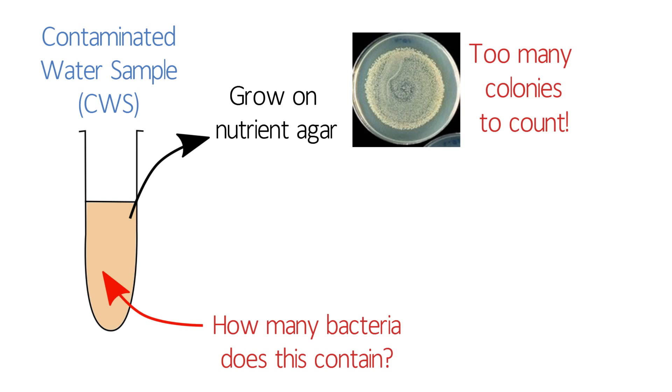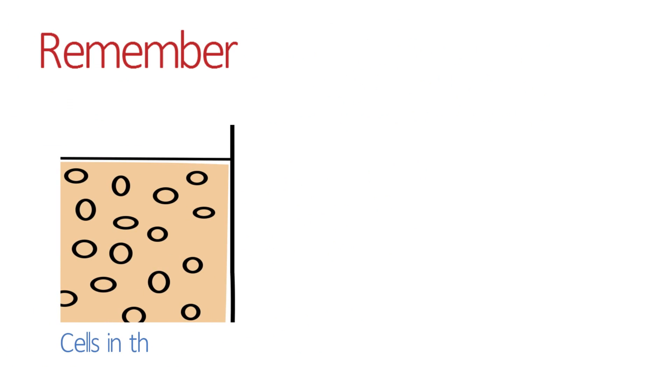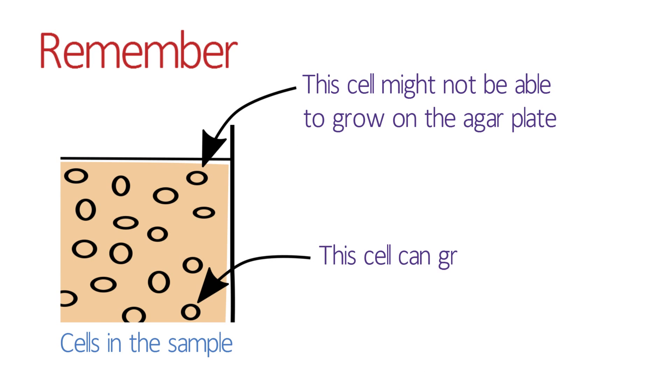We therefore need a way to dilute the sample enough so that we can count individual colonies and work out how many colony-forming units were present in the original sample. Remember, not all bacterial cells in the sample will be able to grow on this particular type of agar, so you should call them colony-forming units or CFUs throughout. Don't call them cells because the two things aren't quite the same.